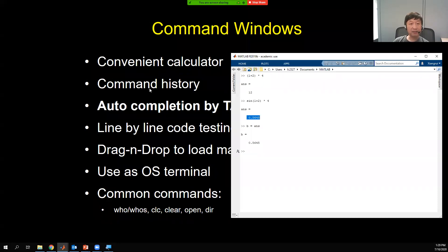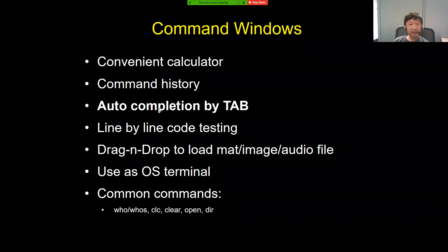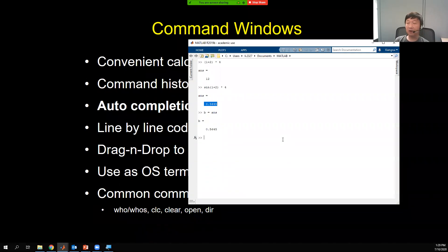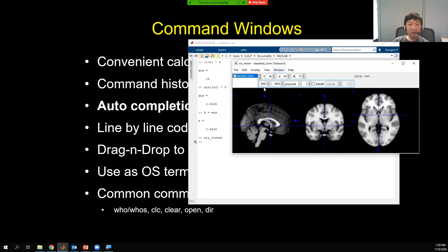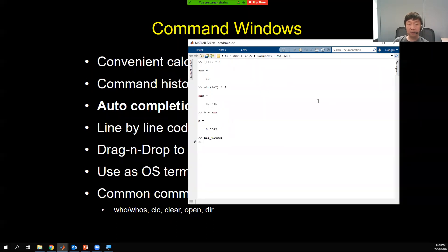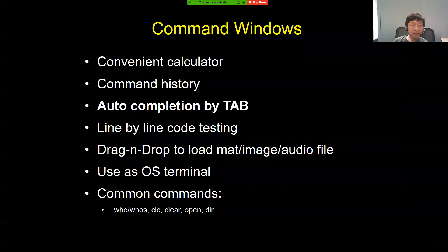Another feature is tab completion. For example, if I'm going to use the NIfTI tool, I don't need to type the full name — just type a couple of letters and press tab. It will show you all functions starting with 'nii_'. So like the NIfTI viewer — if you start it, it will show some brain pictures. That's very convenient, so you don't have to remember the whole name, especially if it's too long. It's also recommended to use longer names because of potential name conflicts.